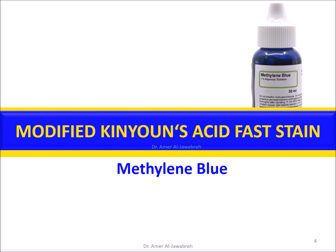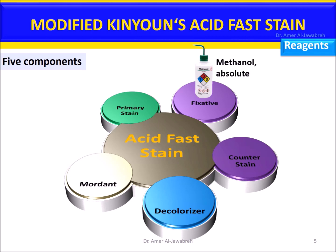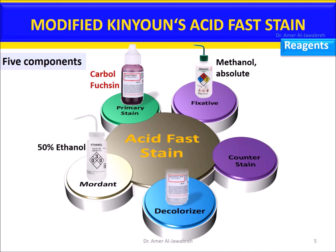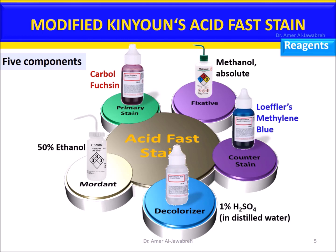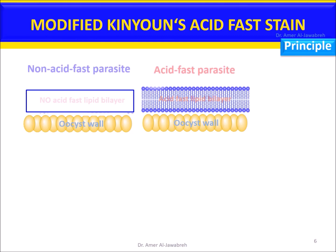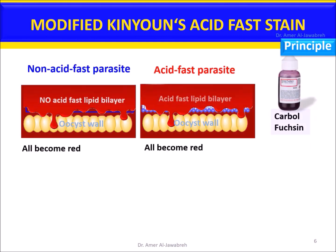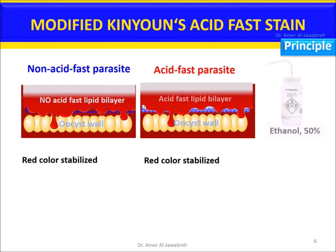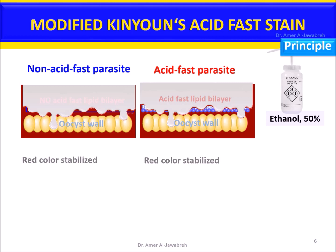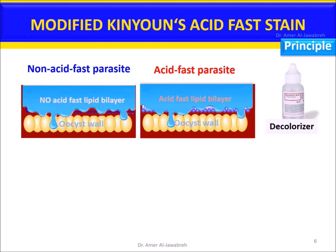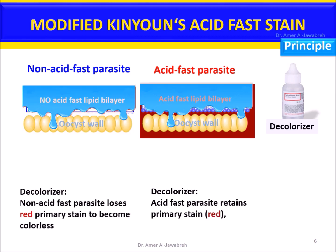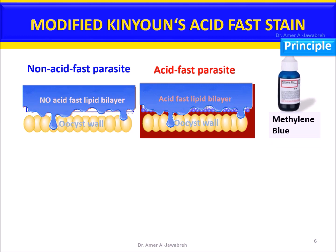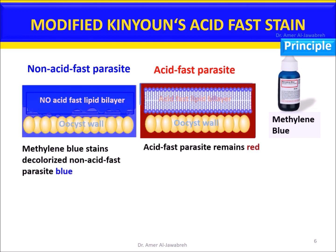Reagents: five components — absolute methanol as fixative, carbol fuchsin as primary stain, 50% ethanol as mordant, 1% H2SO4 as decolorizer, and Löffler's methylene blue as counter stain. Non-acid-fast and acid-fast parasites are first flooded with carbol fuchsin — all become red. Adding 50% ethanol stabilizes the red color. Then the decolorizer is added: non-acid-fast parasites lose the red primary stain and become colorless, while acid-fast parasites retain the red stain. Finally, methylene blue stains the decolorized non-acid-fast parasites blue while acid-fast parasites remain red.